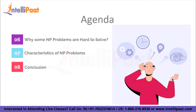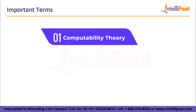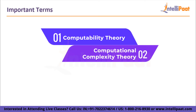Before we move forward, let us take a look at some important terms. First, computability theory is a branch of mathematics concerned with the concept of an effective procedure, one that can be carried out by following a set of instructions. Next, computational complexity theory is concerned with classifying and relating issues that are solved by computers according to their resource utilization.